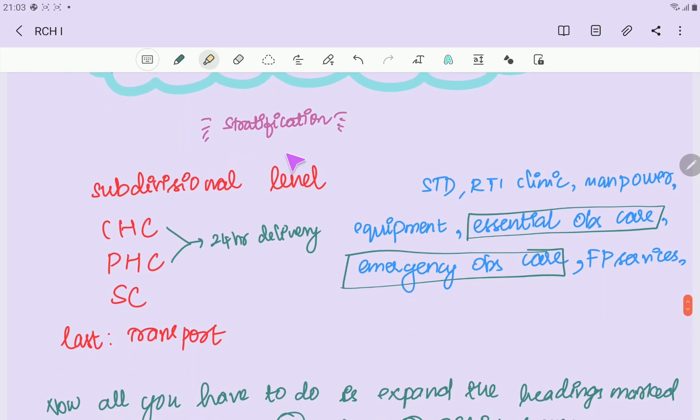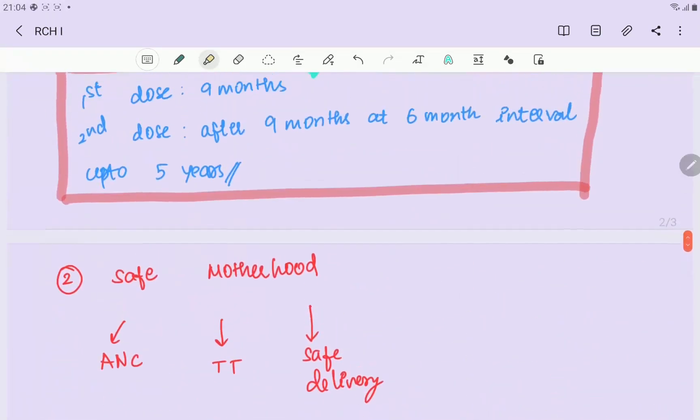This was at all districts, then selected districts. For selected districts, it's essential and emergency obstetric care. There should be manpower, equipment and everything needed. Family planning services at PHC level, sub-division level, STD clinic. PHC 24-hour delivery services, then referral transport - if there's an emergency case, you can arrange free transport.